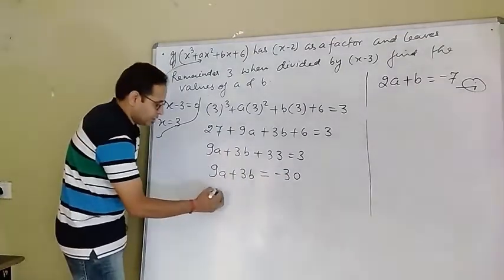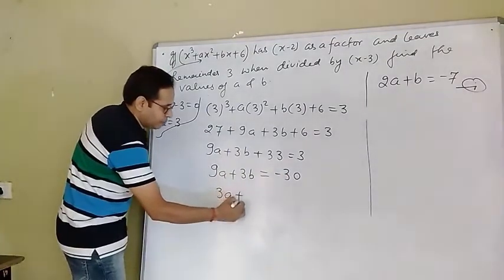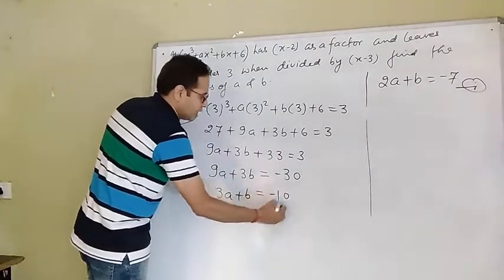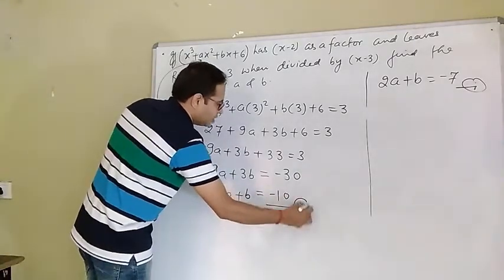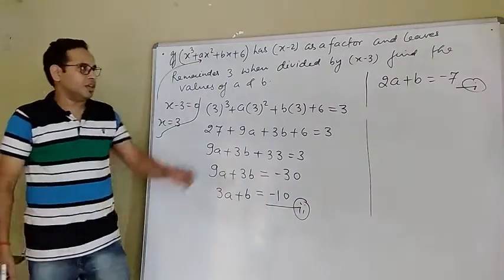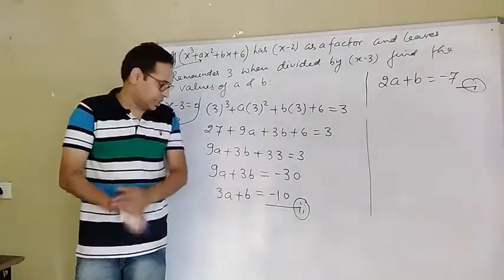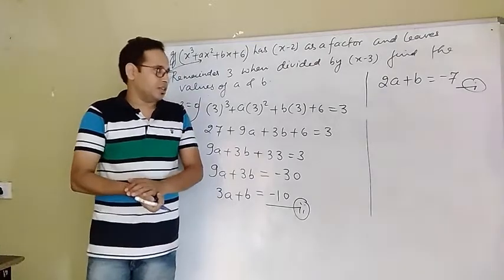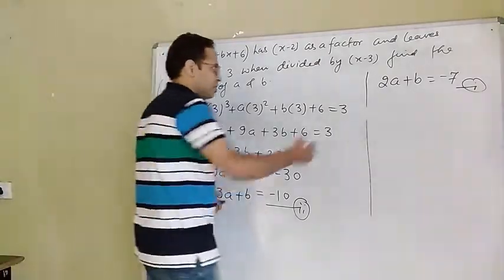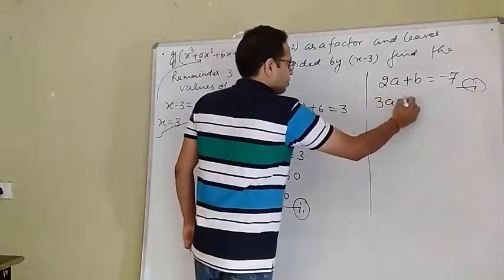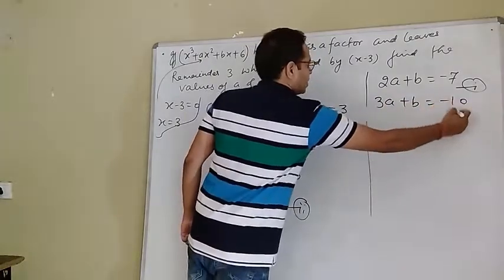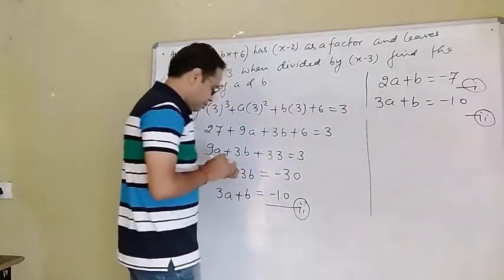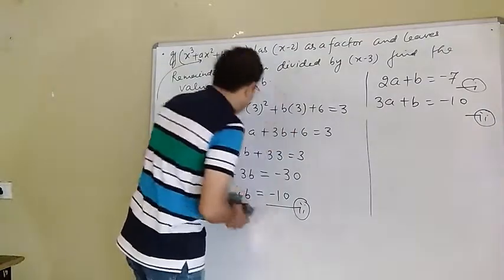Dividing the entire equation by 3, we get 3a + b = -10. This is our equation number 2. So we have got two equations: 2a + b = -7 (equation 1) and 3a + b = -10 (equation 2).